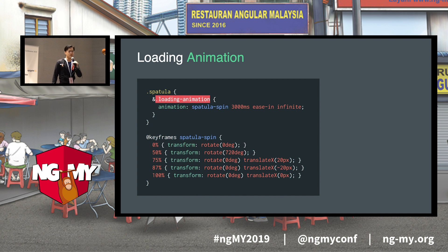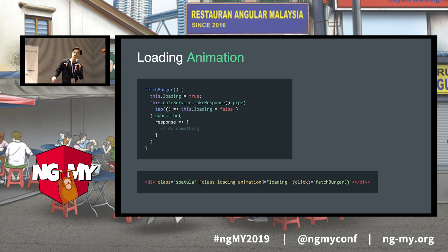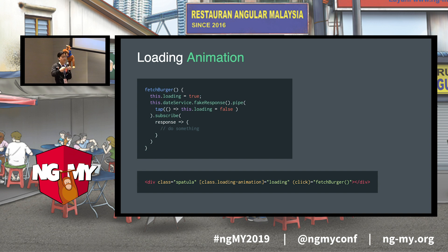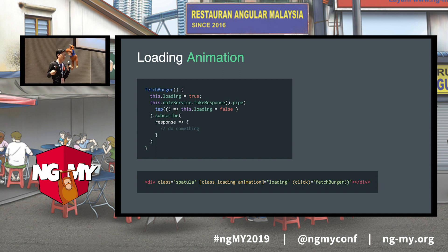For loading animations, the concept is identical — it just has a bit more keyframes. We add it into our application using property binding: we bind the loading animation class name onto our spatula object based on whether the this.loading property is true on our component. When you click the spatula, we make an HTTP call, first set this.loading to true — which starts the animation — and when the HTTP call comes back, we intercept it using RxJS tap, set it to false, and voila.